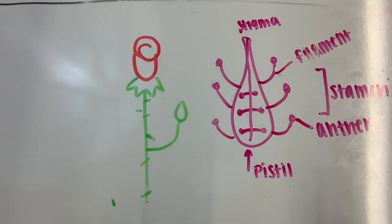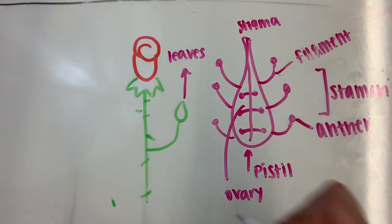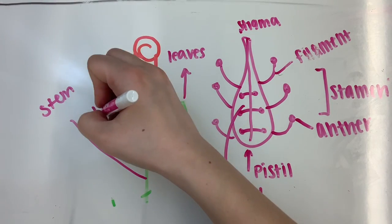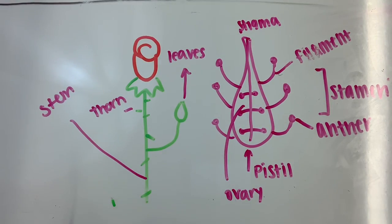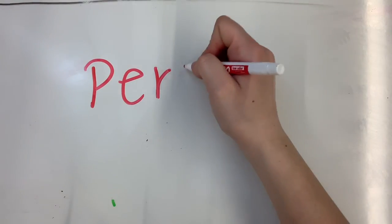The pistil is the female part of the flower, and this is made up of the stigma, style, and ovary. The leaves help the flower undergo photosynthesis. The stem supports the flower and stores nutrients, transports water, and produces new living tissue. The rose has thorns that can protect itself from things wanting to harm it.